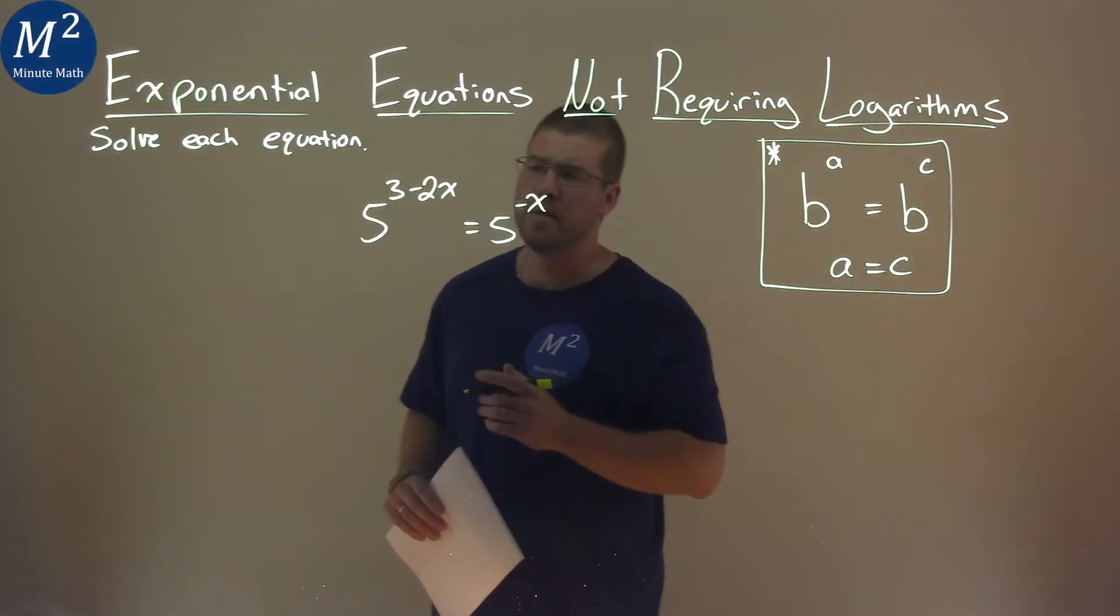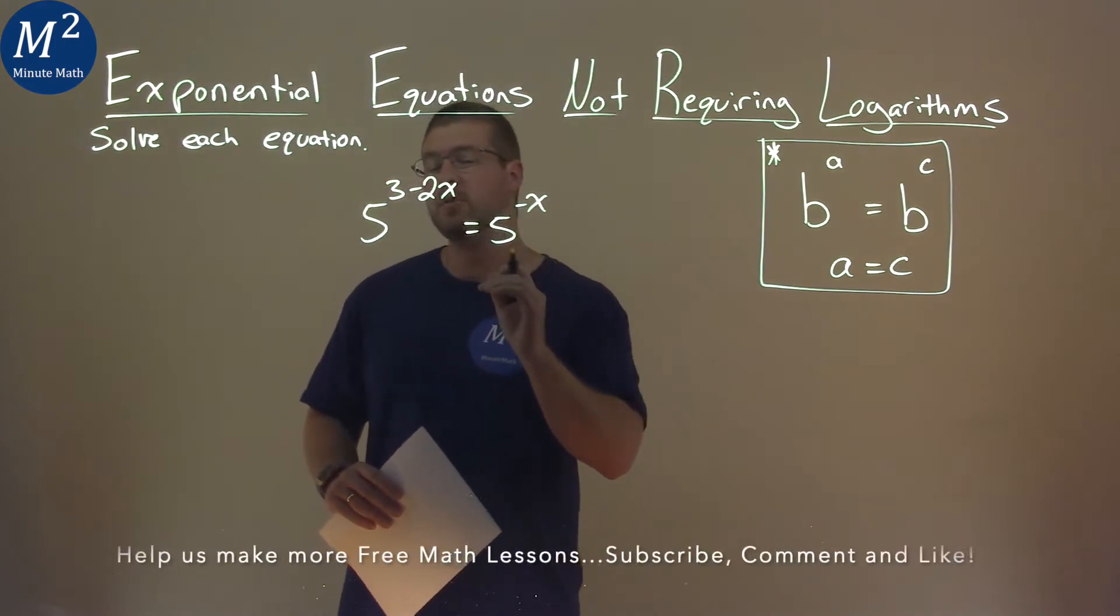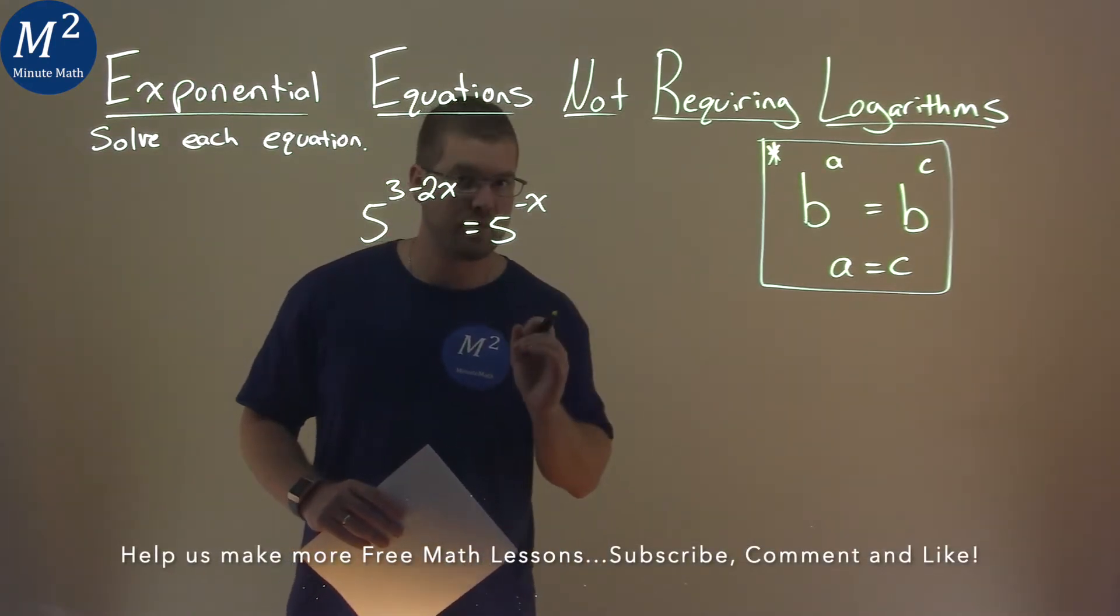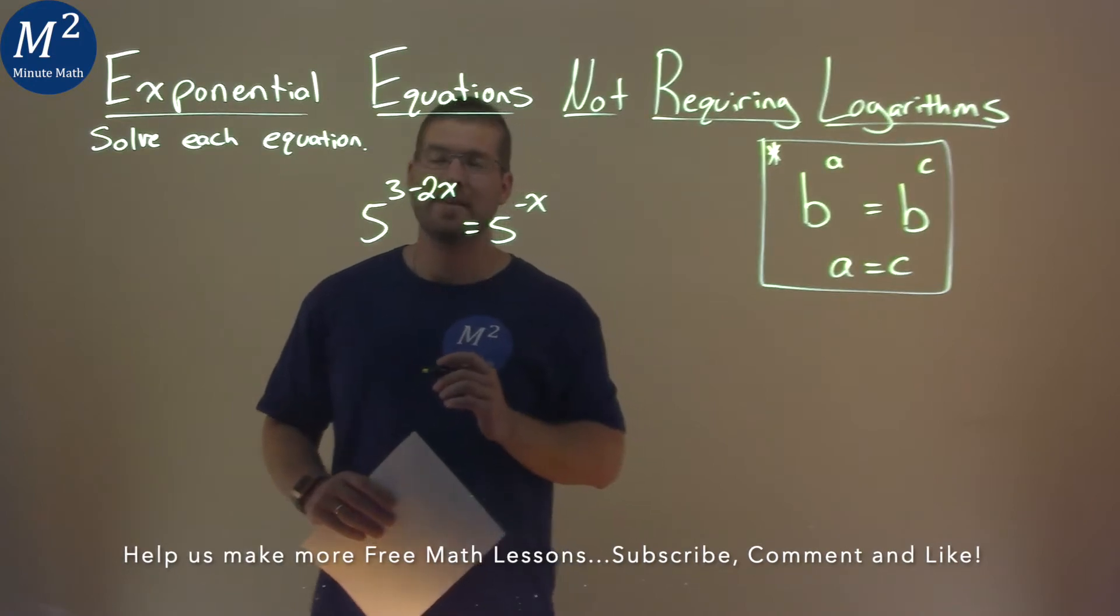We're given this problem right here: 5 to the 3 minus 2x power equals 5 to the negative x power. Now we have to solve this equation.